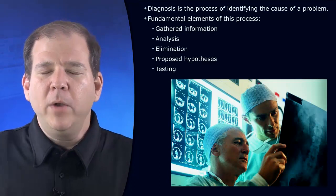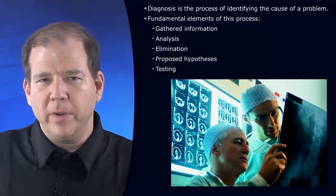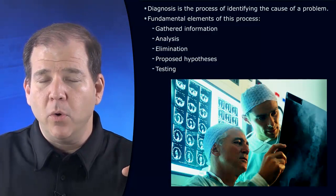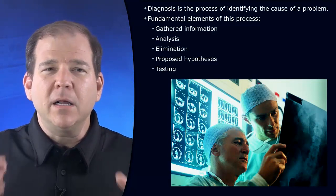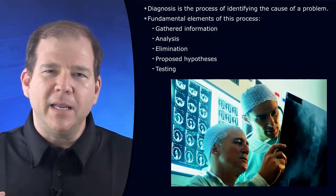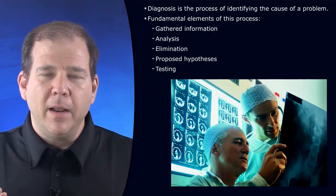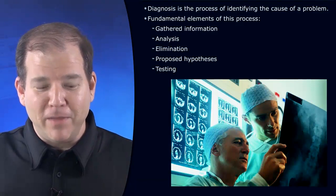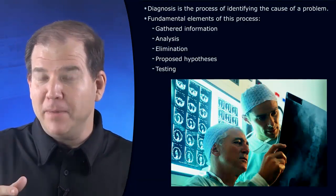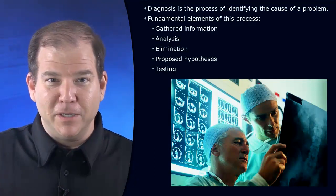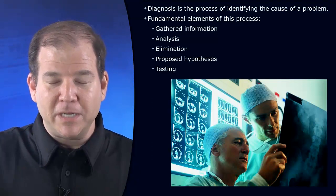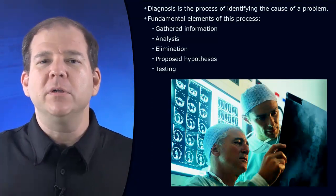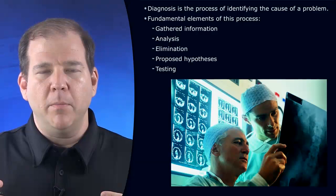When we have a trouble ticket or we hear about a problem on the network that we're supporting, we need to clearly define and clearly articulate the problem. The problem is not 'the internet is broken.' It might be that the PCs on this subnet cannot get to this particular host out on the internet. Once we define the problem, we're going to start to gather information around that problem.